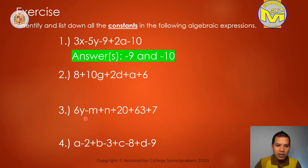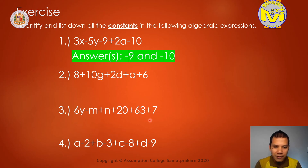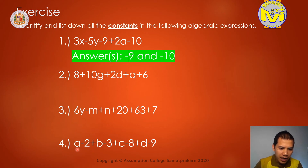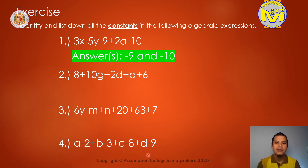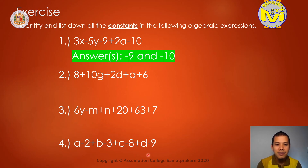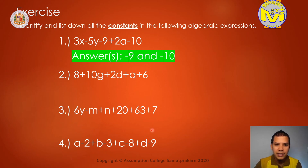Number 3: we have 6y minus m plus n plus 20 plus 63 plus 7. How many constants can you identify here? I think we have 1, 2, 3 — I think we have 3. But I will not tell you. In number 4: a minus 2 plus b minus 3 plus c minus 8 plus d minus 9. Identify the constants. I can count 1, 2, 3, and 4 — yes, we have 4. But I will not tell you. You can write on your paper or on your notebook.